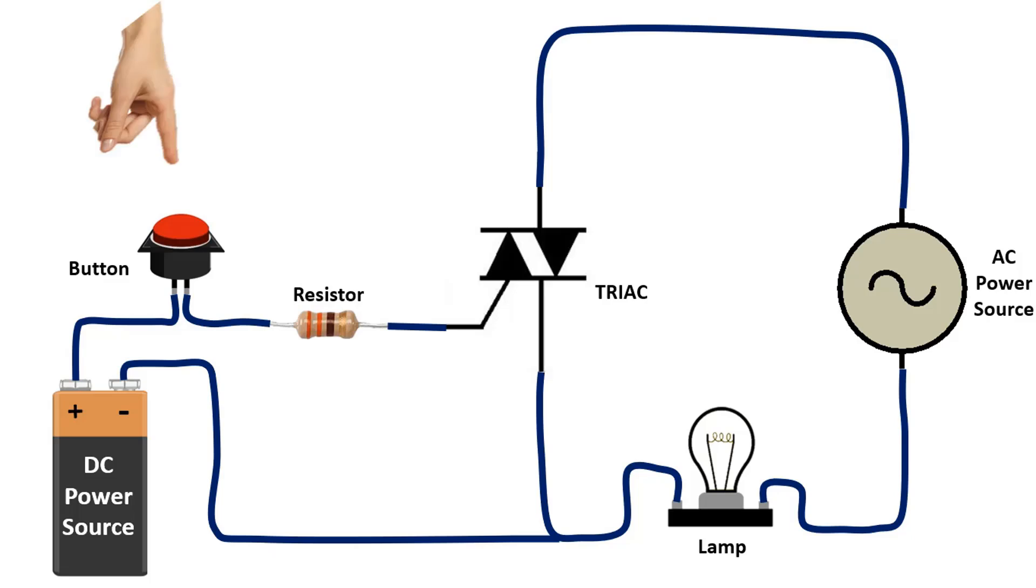Here, when we press the button, the TRIAC will be triggered with a small current and a large AC current will flow from MT1 to MT2. Thus, the lamp will light up.